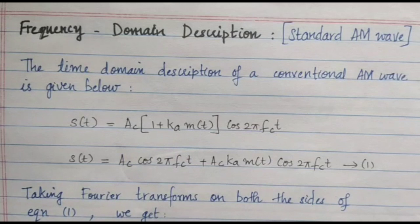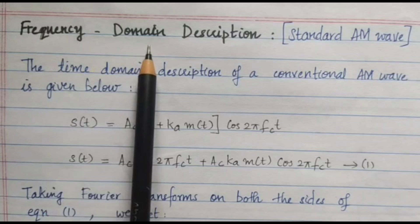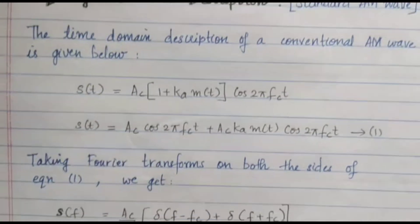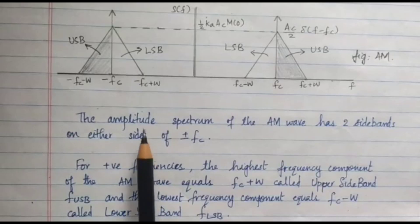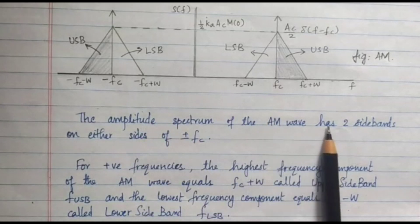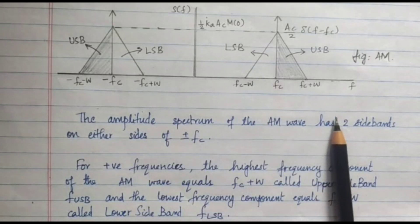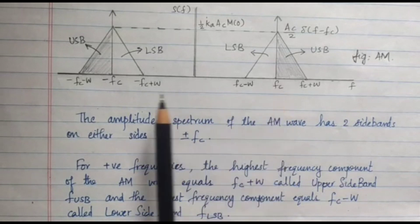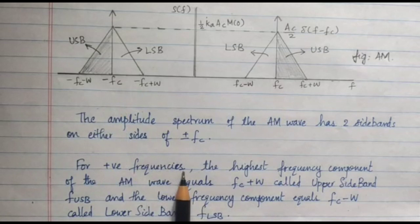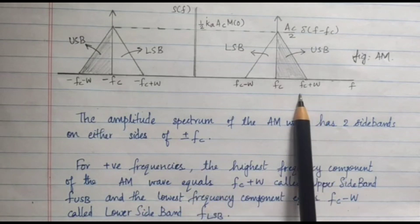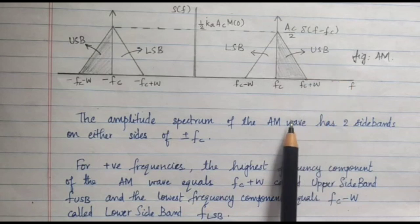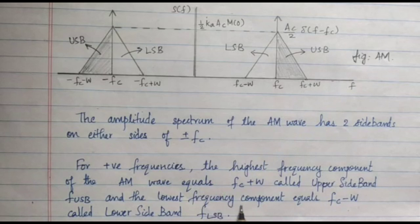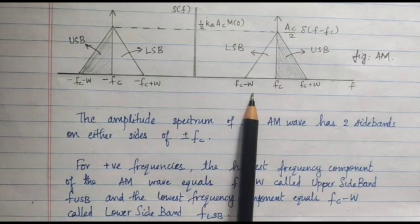We have to convert the time domain expression into the frequency domain, so we apply the Fourier transform. The amplitude spectrum of the AM wave has two sidebands on either side of ±FC. For positive frequencies, the highest frequency component equals FC + W, called the upper sideband (FUSB), and the lowest frequency component equals FC − W, called the lower sideband (FLSB).